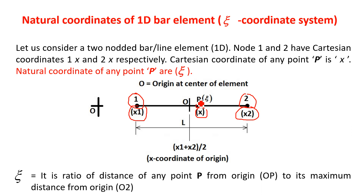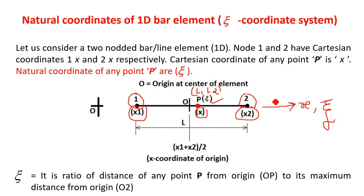The only change is this: in the previous video, when we derived the natural coordinates in the XY coordinate system, the total number of natural coordinates for point P was 2, represented by L1 and L2. But if we are representing natural coordinates by ξ, since the bar is a one-dimensional element having only the X direction — which is ξ in the natural coordinate — there is only one natural coordinate at any point of the bar element.